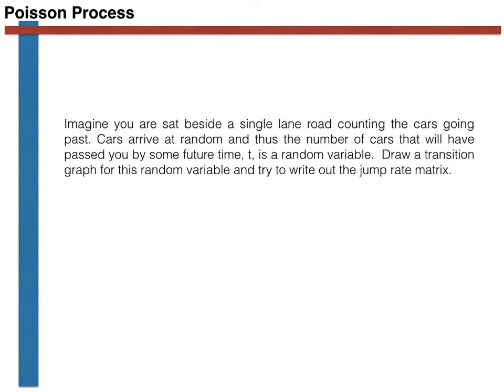In order to understand the Poisson process, let's begin by understanding a real-life manifestation of this particular random process. Imagine that you are sat beside a single lane road counting the number of cars that have passed. Obviously the time at which cars pass is random, or at least subject to factors in their drivers' lives that you cannot possibly understand. The number of cars that have passed by you at time t is thus a random variable. Pause the video and draw a transition graph for this particular process.